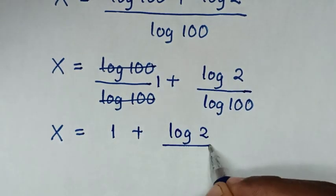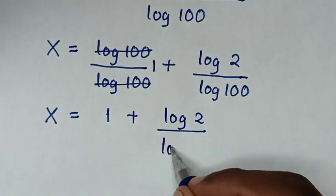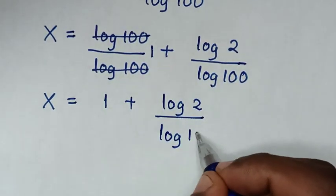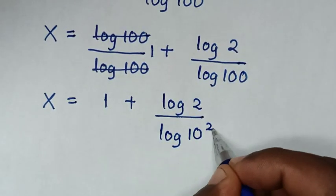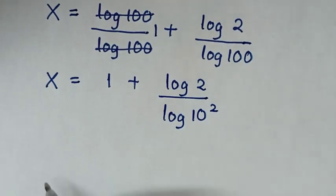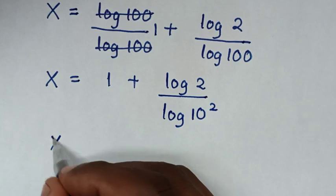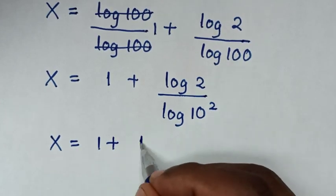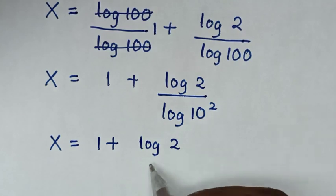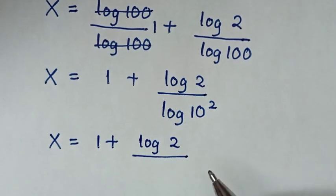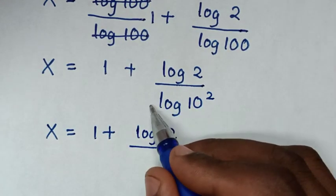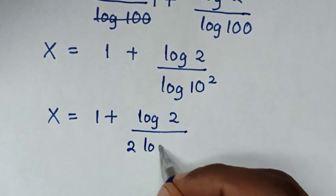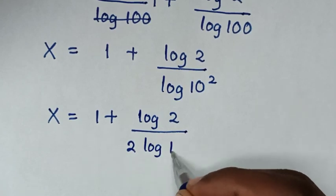Then, log of 100 is the same as log of 10 squared. So it will be x is equal to 1 plus log of 2, over log of 10 squared. The power of 2 will move to the front, giving 2 times log of 10.